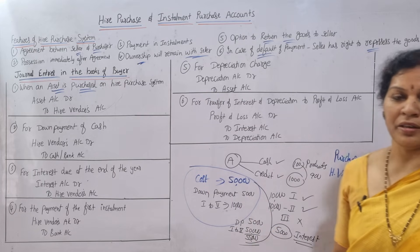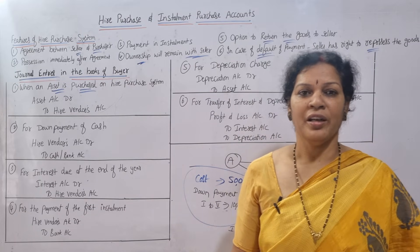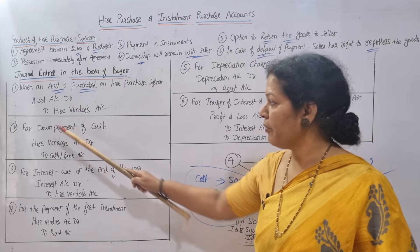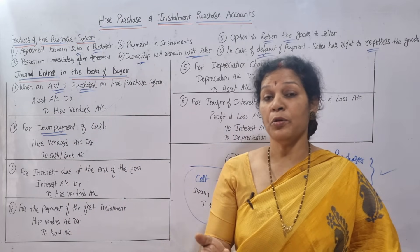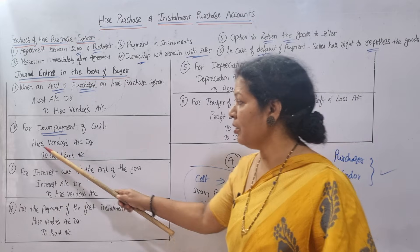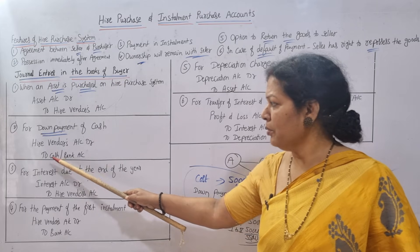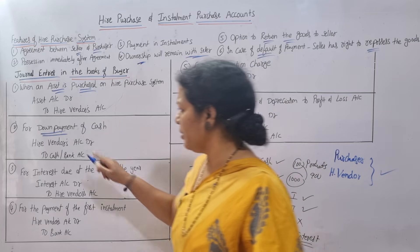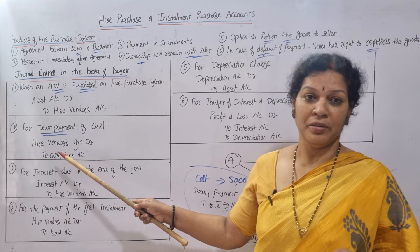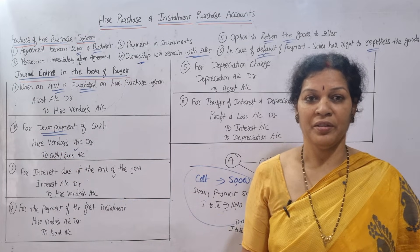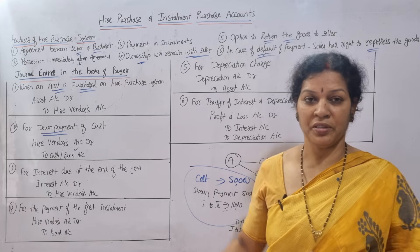Second entry: for down payment of cash. You are paying cash to the hire vendor, so debit the receiver and credit what goes out. The entry is — Hire Vendor's Account debit, to Bank Account credit. Whenever you make any payment to the hire vendor, whether down payment or installment, Hire Vendor's Account is debited and Bank Account is credited.